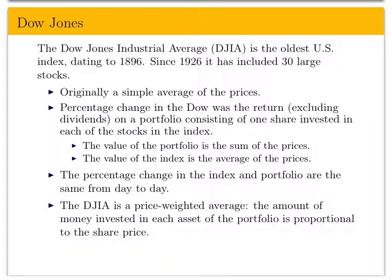So the Dow Jones Industrial Average is what we refer to as a price-weighted average. The amount of money invested in each asset — that is, the weight it bears in your portfolio — is proportional to the share price, because the amount of money you put into each stock is exactly the price of the share.